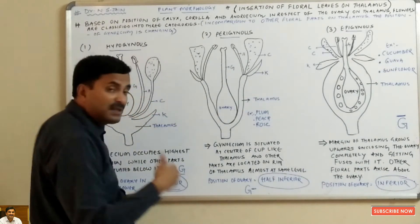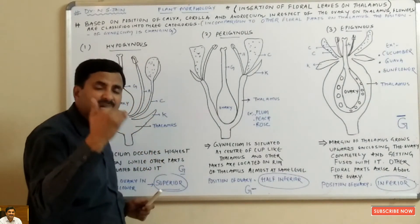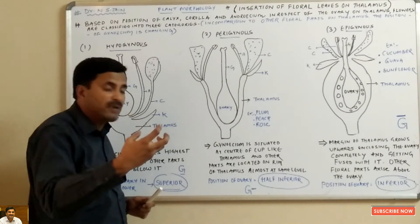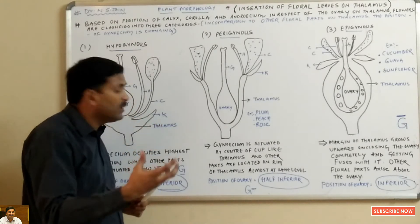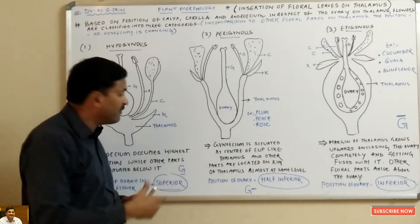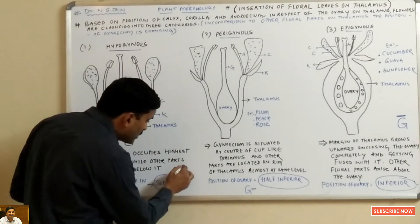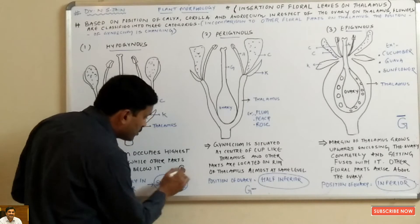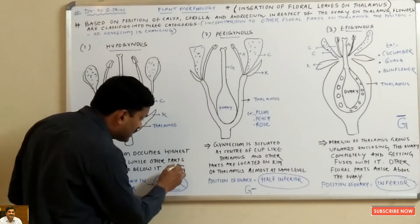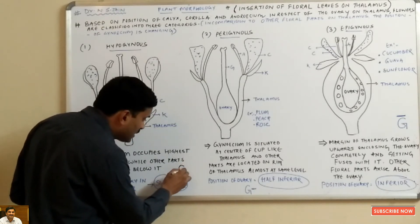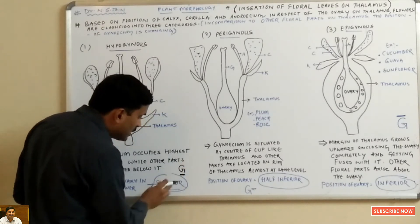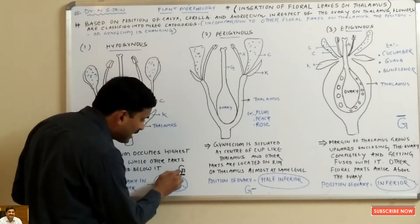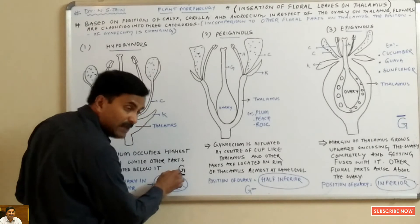When we study plant families, we use a specific sign to represent the hypogynous condition. To show a hypogynous flower, we write G and put a slash below it. This sign represents the superior ovary condition.